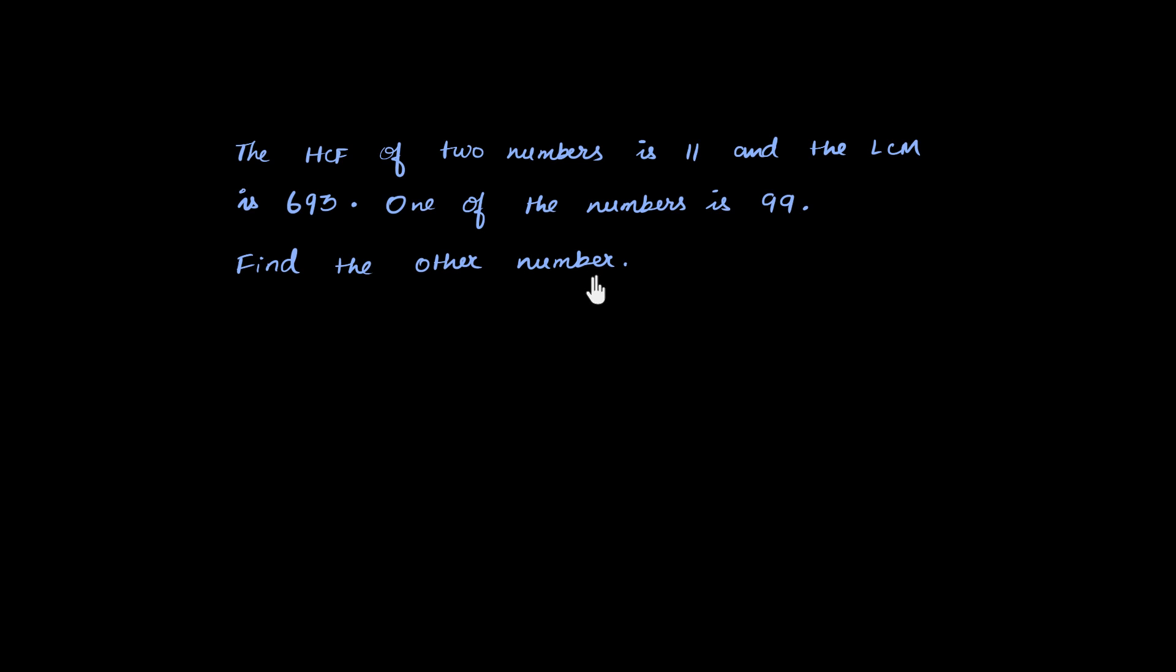Now, how do you want to think about this question? You just learned a new property. So your mind might be thinking, oh, I can definitely use it. Just before you conclude that, always verify, hey, it is two numbers. So it'll work. If it's three or four or five, it won't work. So it's two numbers. So yeah, we can use that property. And what is that property? The HCF multiplied by the LCM will be equal to the product of the two numbers. Maybe for now we can call these two numbers N1 and N2.